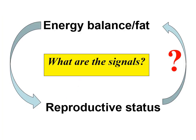So we're beginning to see quite a complex relationship between energy balance, how much fat you've got, and reproductive status. It's a two-way process: energy balance affecting reproductive status, and reproductive status and steroids affecting appetite and energy balance.